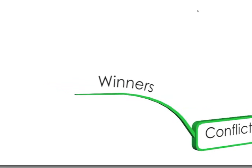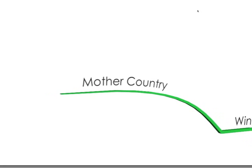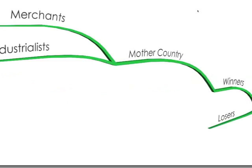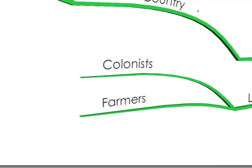There's a conflict of mercantilism with winners in the mother country, the merchants and industrialists. The losers are the colonists, particularly the farmers.